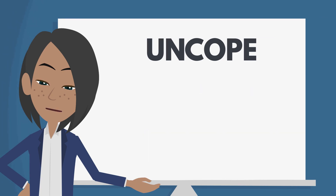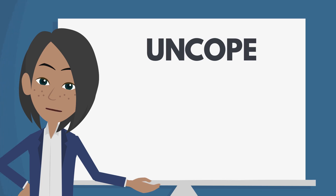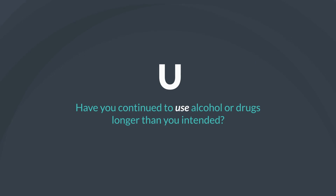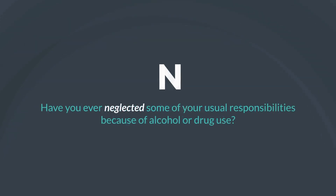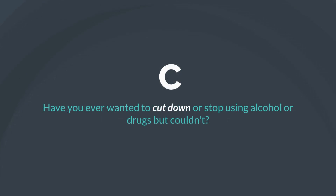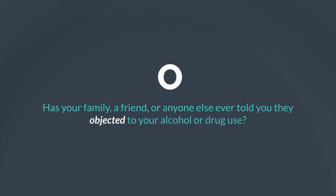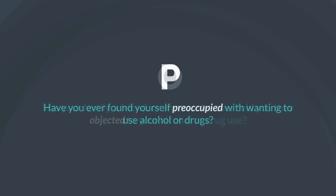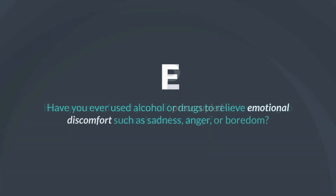Here are the questions that make up the UNCOPE. U: Have you continued to use alcohol or drugs longer than you intended? N: Have you ever neglected some of your usual responsibilities because of alcohol or drug use? C: Have you ever wanted to cut down or stop using alcohol or drugs but couldn't? O: Has your family, a friend, or anyone else ever told you they objected to your alcohol or drug use? P: Have you ever found yourself preoccupied with wanting to use alcohol or drugs? E: Have you ever used alcohol or drugs to relieve emotional discomfort, such as sadness, anger, or boredom?